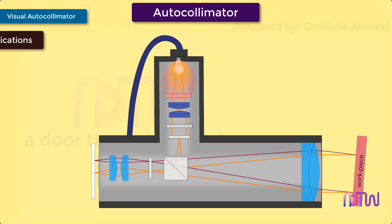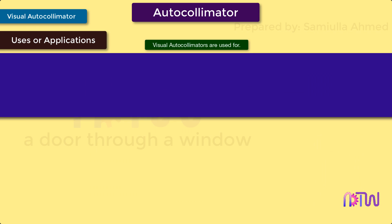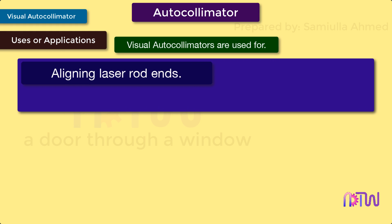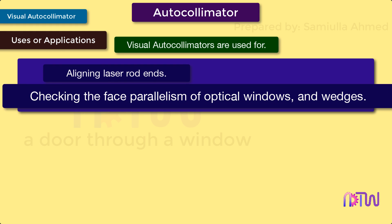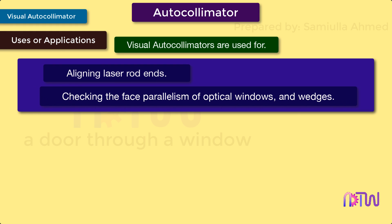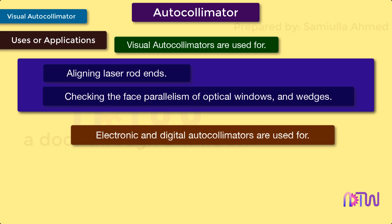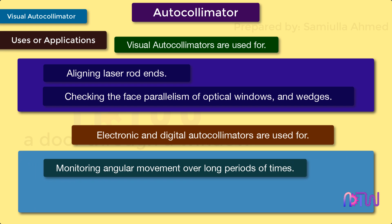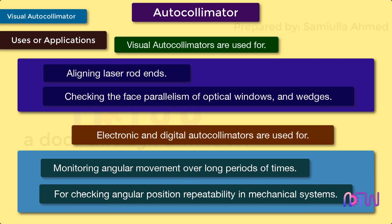Visual autocollimators are used for aligning laser rod ends and checking the face parallelism of optical windows and wedges. Electronic and digital autocollimators are used for monitoring angular movement over long periods of time and for checking angular position repeatability in mechanical systems.